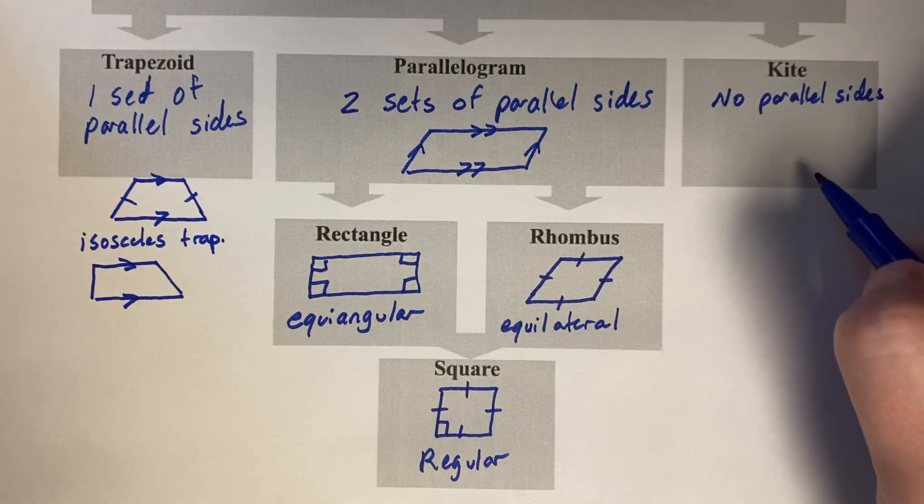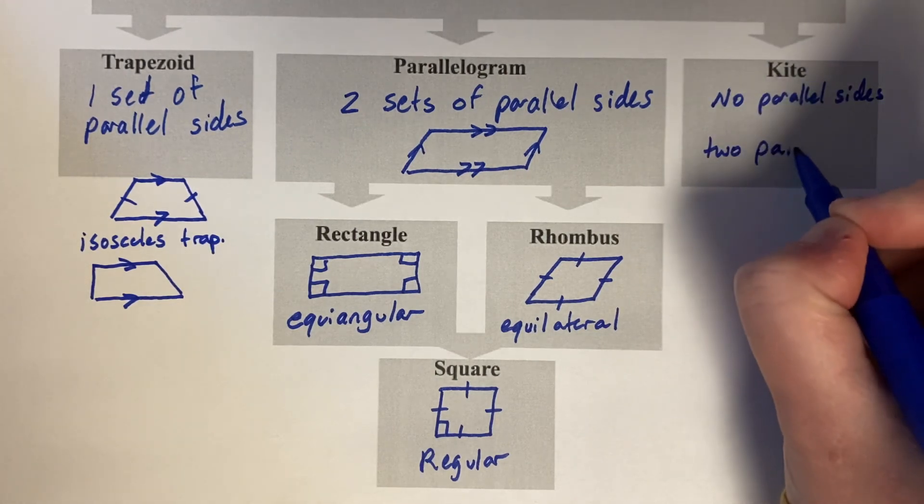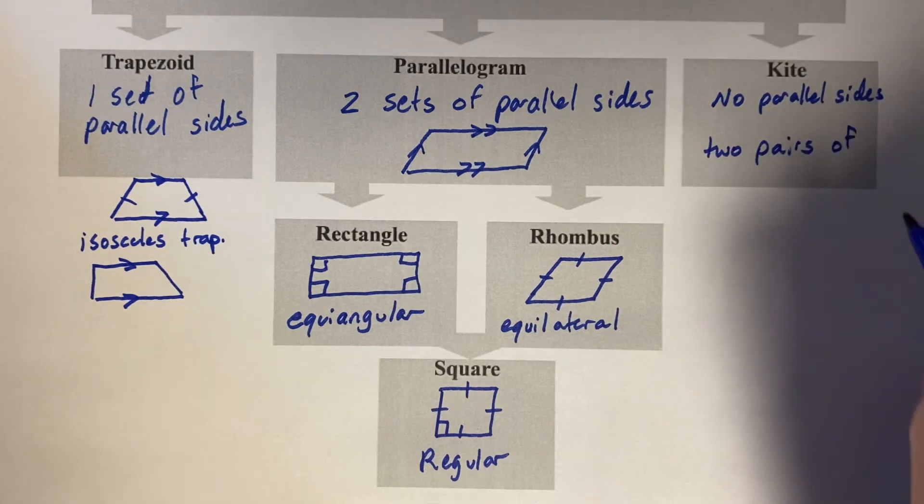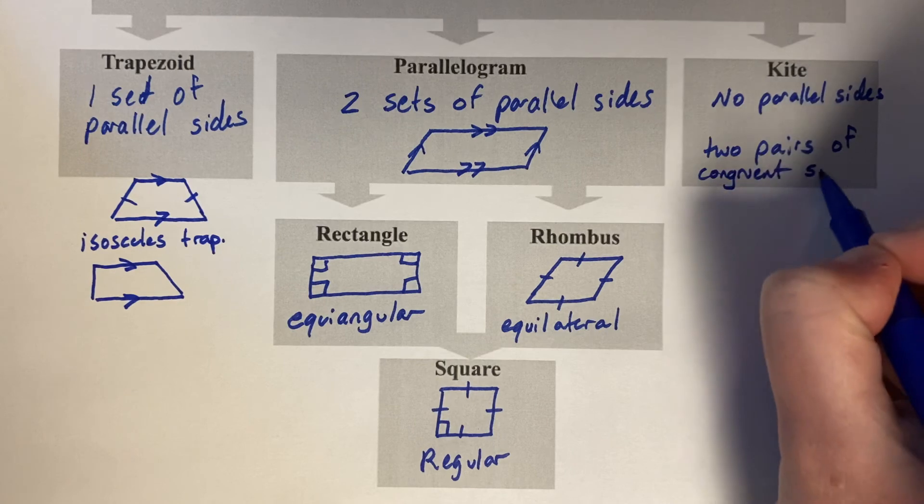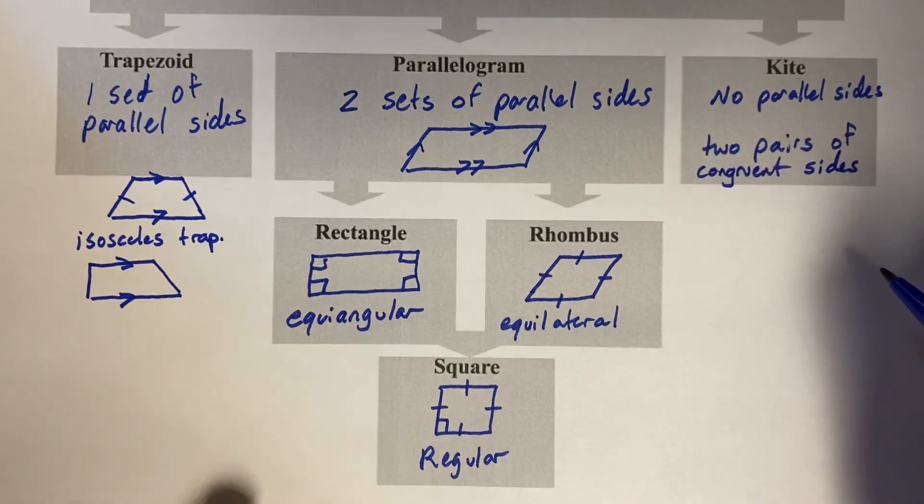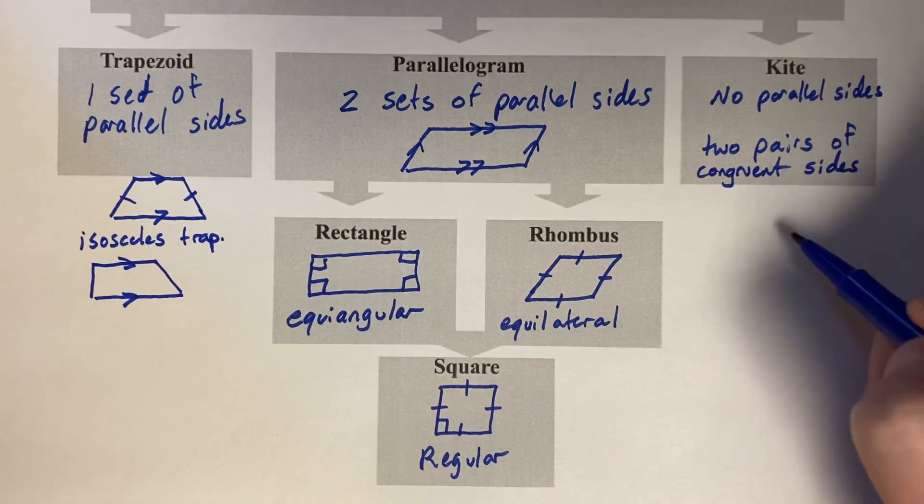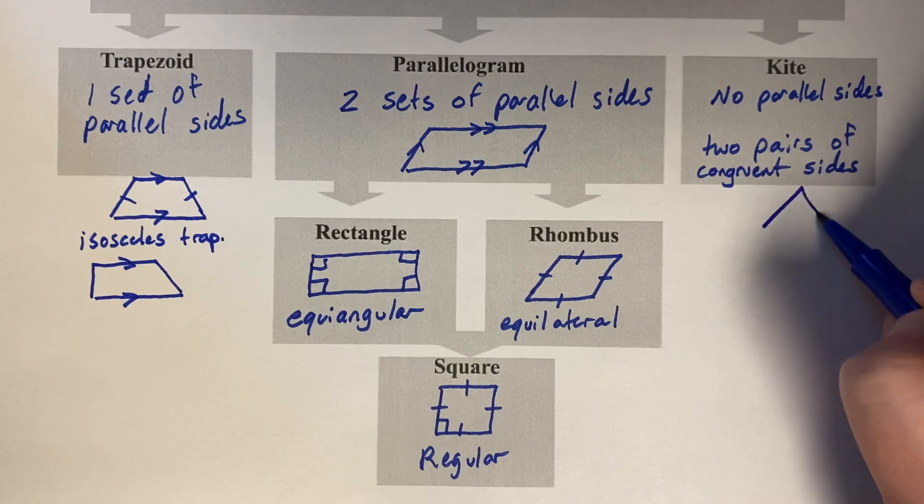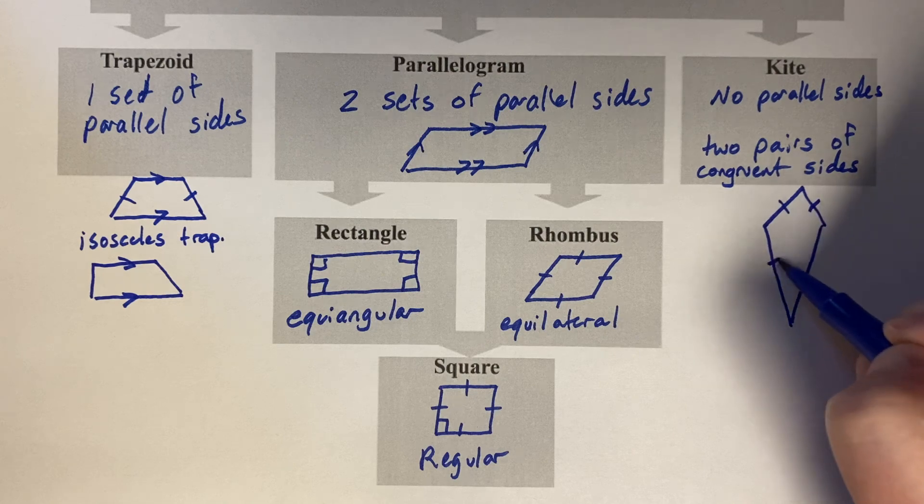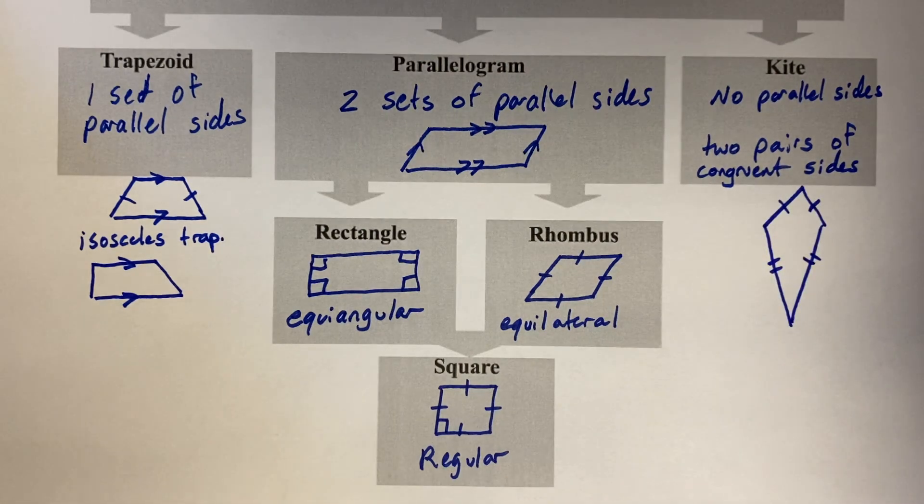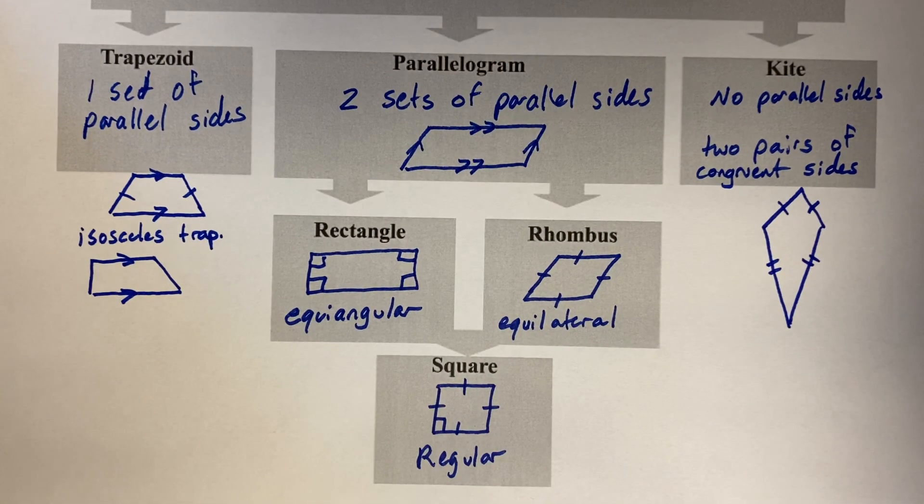A feature of a kite is that it has two pairs of congruent sides, not parallel sides but congruent sides. And typically we like to draw our kites kind of like this, where two sets of parallel sides create a kite.